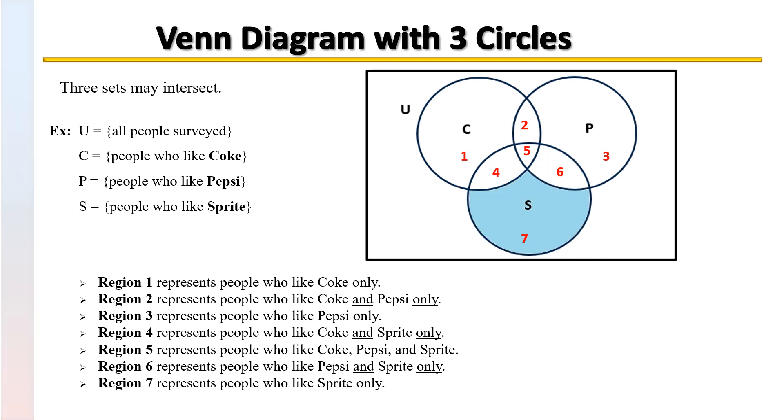Region 7 represents those people who like Sprite only. These people do not care for Coke or Pepsi. They just like Sprite of those choices.